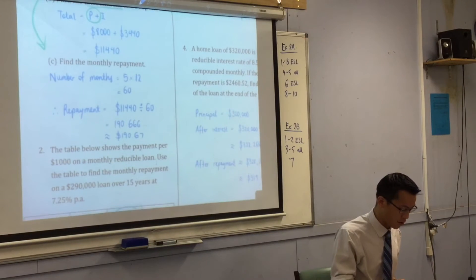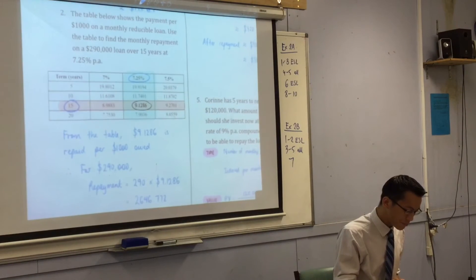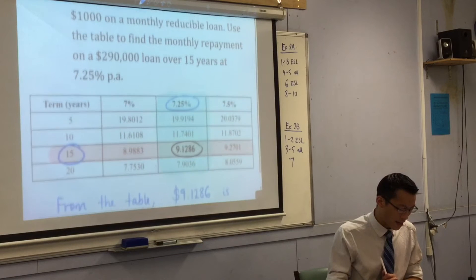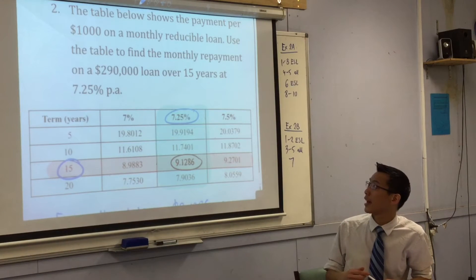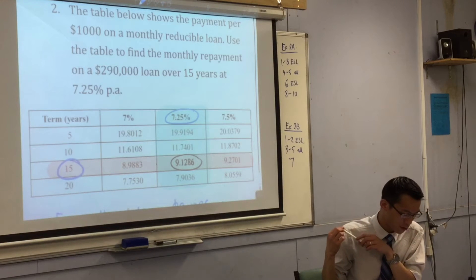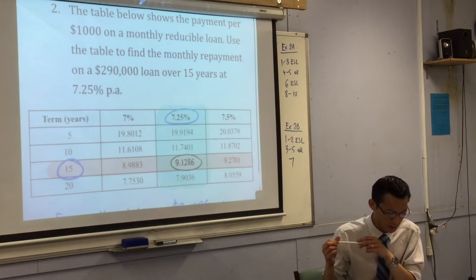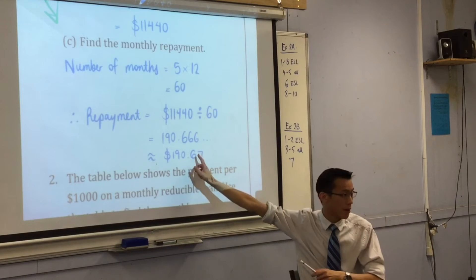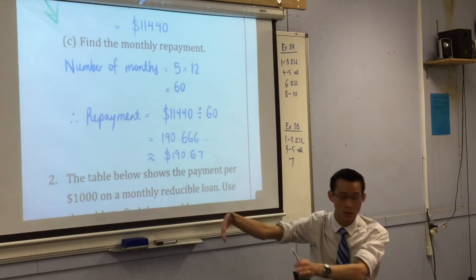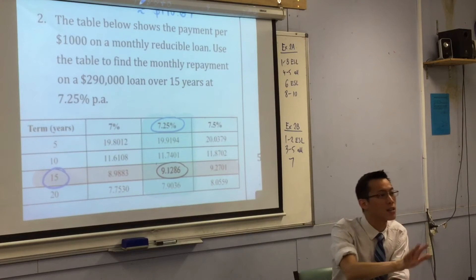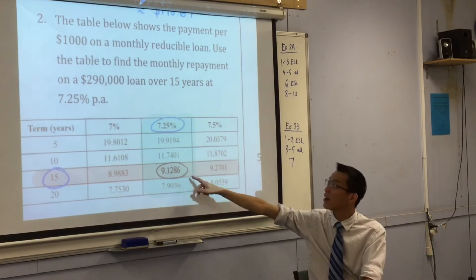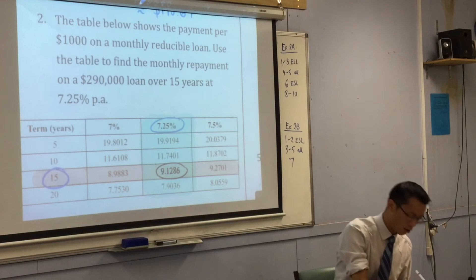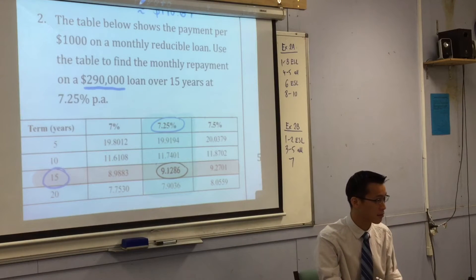So that was a bit of a warm-up, even though it had plenty of parts. Let's have a look at this next one. Now, you've seen these before. You've looked at a table like this, and it's a bit tricky to read, which is the whole point of asking a question like this. So read the beginning. It says, the table below shows the payment per $1,000 on a monthly reducible loan. In other words, you know how we worked out up here? We worked out your monthly repayment on such and such amount of borrowing.